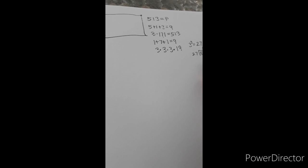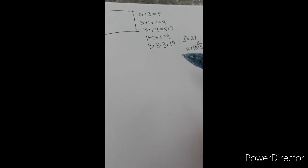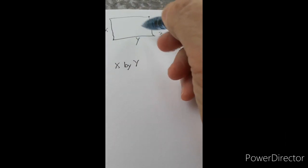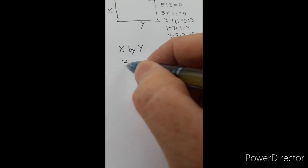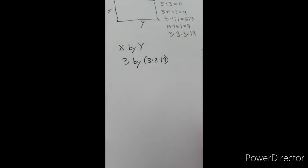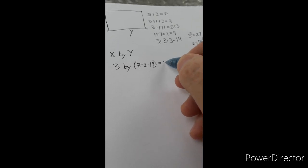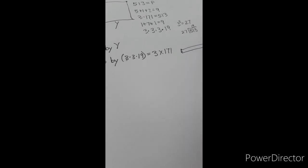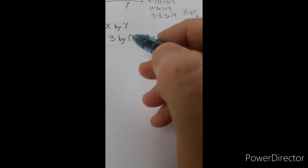Once we know the factors, then we have to look at the different combinations of 3, 3, 3, and 19 that will give us an x by y shape. We can try different ones. For instance, a 3 by 3×3×19, this is a big huge number. This is in fact a 3 by 171. That would be a puzzle that looks like this wide and very very long. This would be three pieces here and 171, so that's obviously not going to work.